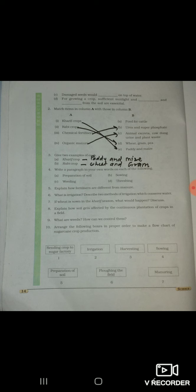Third question is, give two examples of each. Kharif crop: paddy and maize. Rabi crop: wheat and gram.